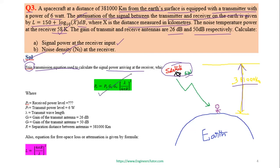The Friis equation is given as PR = PT · GT · GR · (λ / 4πR)², where PT is the transmitted power, GT is the gain of the transmitting antenna, GR is the gain of the receiving antenna, and the values for these are given in the problem.